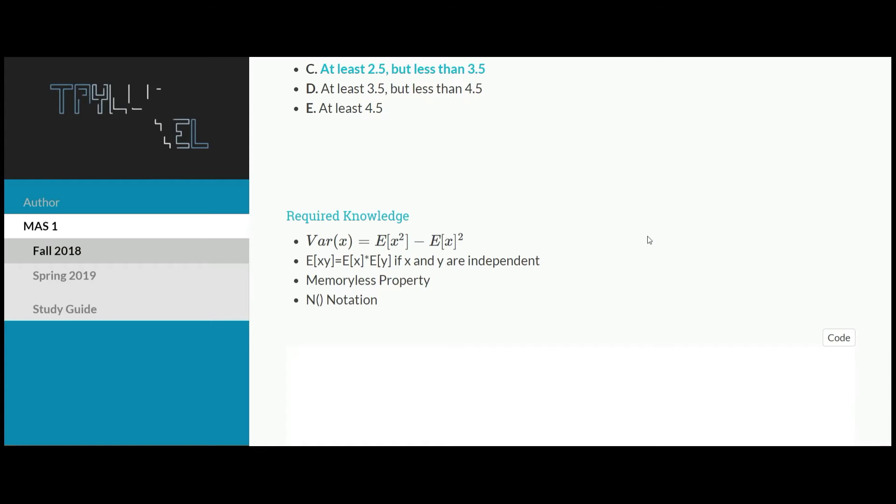In this problem, we have four bullet points of what we need to know before we can attempt this. First and foremost is that variance of x equals the expected value of x squared minus the expected value of x squared. This is something I'm guessing you are already familiar with if you passed P.